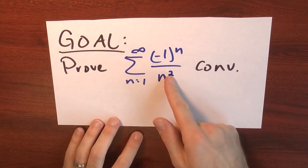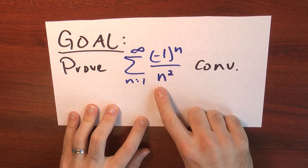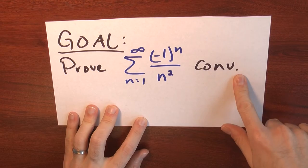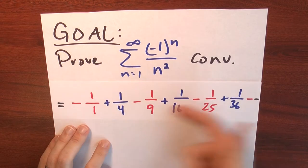I want to prove that the sum n goes from 1 to infinity of minus 1 to the nth power over n squared converges. So how am I going to do this? I can't apply the usual convergence tests because not all the terms are non-negative. I mean, look, here I've written out some of the terms.